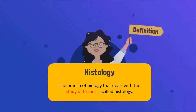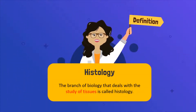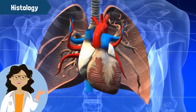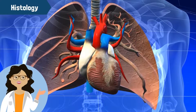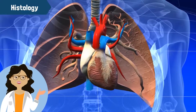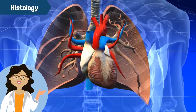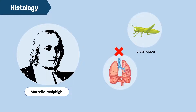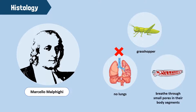The branch of biology that deals with the study of tissues is called histology. Scientists undertake studies in this field to understand the structure of tissues and to link this structure with the functions of tissues. Marcello Malpighi, the father of histology, discovered through a microscope that invertebrates don't breathe through lungs. Instead, they breathe through small pores in their body segments called trachea.